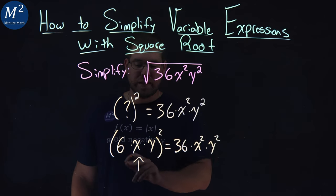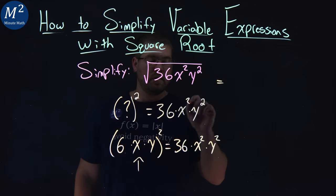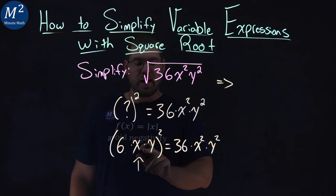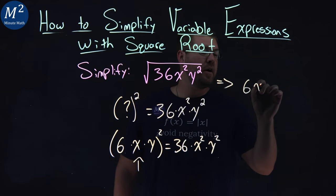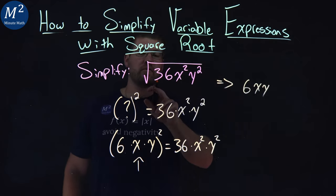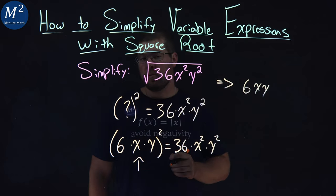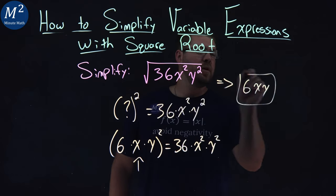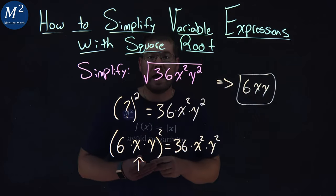So we have what's on the inside here, and so is a 6xy, 6xy right here. And so the square root of 36x squared y squared simplifies to be just a 6xy.